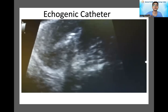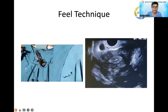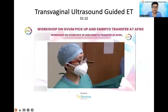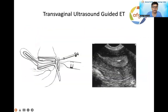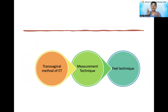Rest, of course, depends on multiple factors we call destiny, which we cannot control, but at least we should be able to do our best. Today's series covered what to do when we cannot see the catheter, and the techniques discussed were the transvaginal method, measurement technique, and feel technique. In the next series, I will explain what we do when we are not able to enter into the uterus.